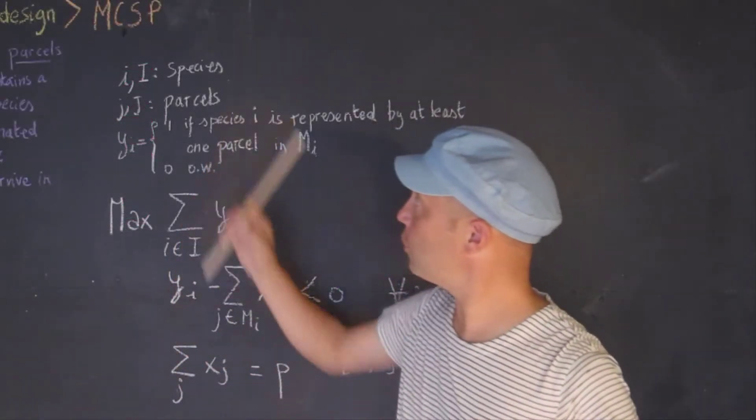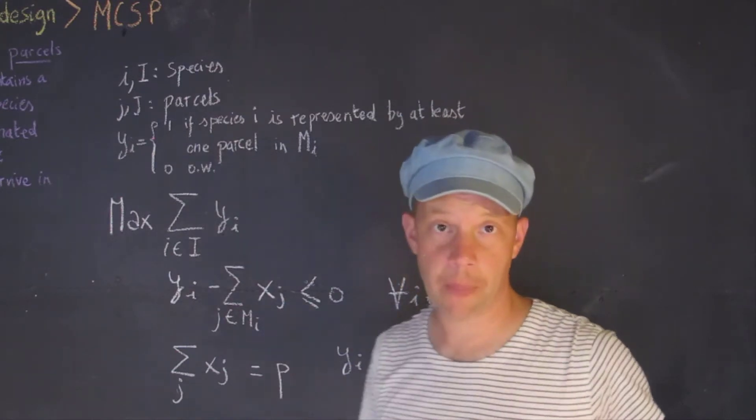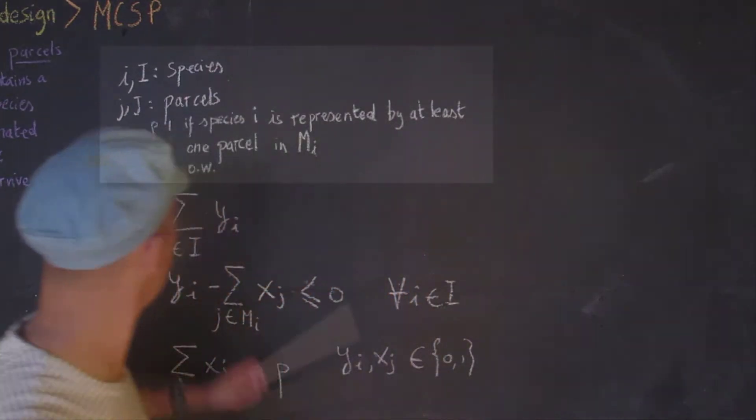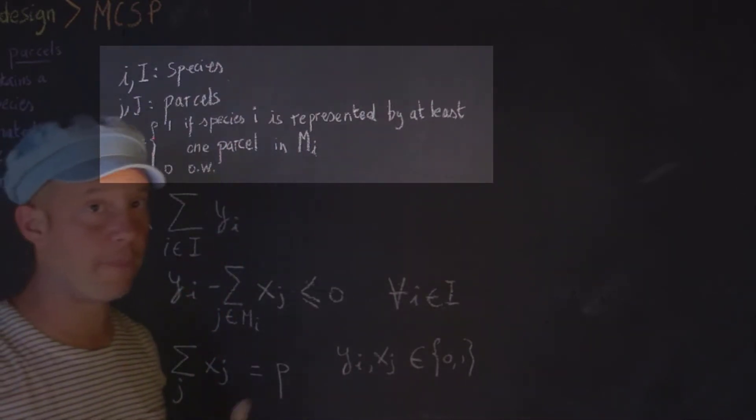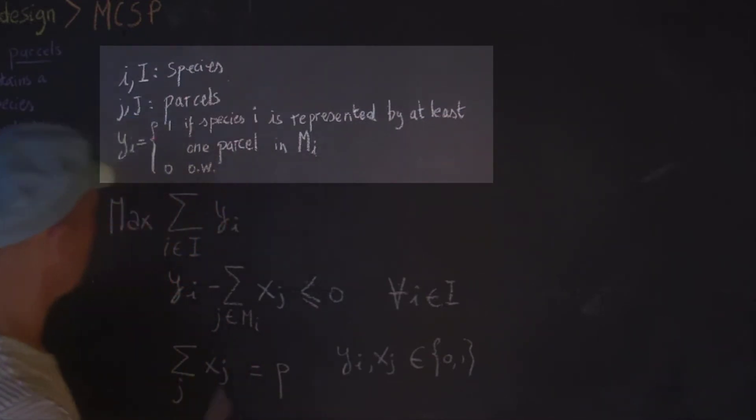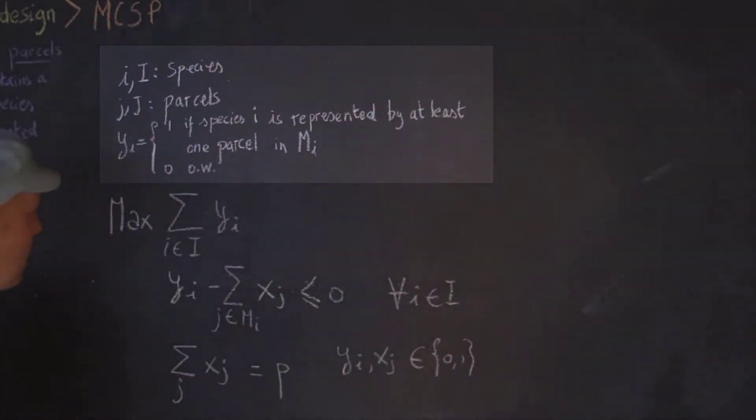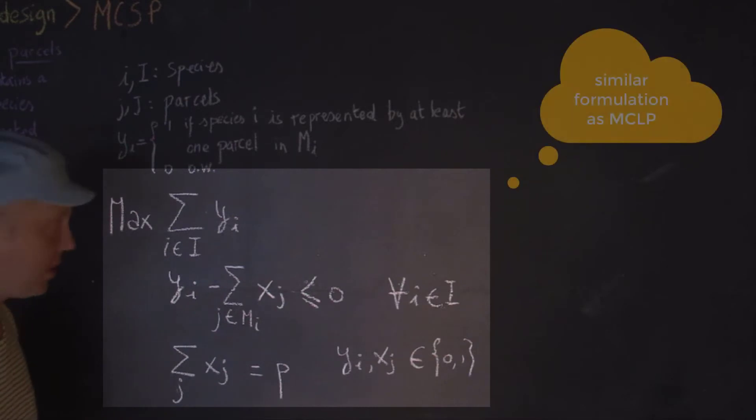I'm going to go over the formulation of the maximum covering species problem. So first off, we have our indices which are the same as the other model. I are for the species, J is for the parcels. Now Y sub I is equal to 1 if species I is represented by at least one parcel in M sub I. Remember M sub I was the set of parcels in which a specific species can be represented and 0 otherwise. So our objective here is to maximize the species that can be represented in our system.